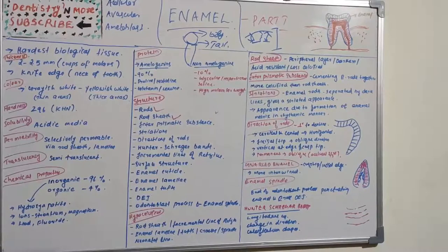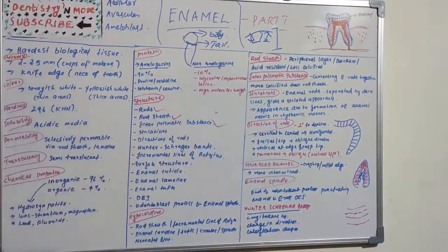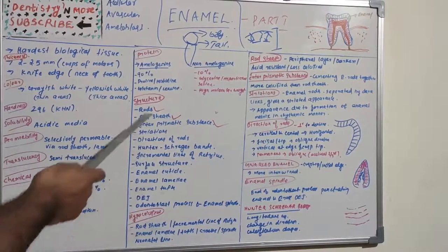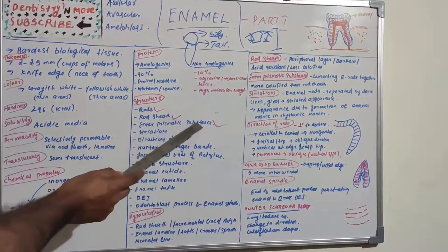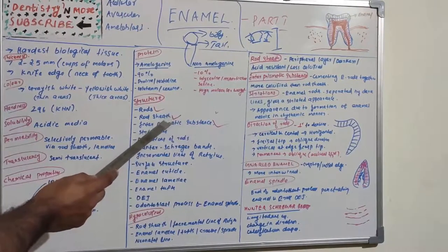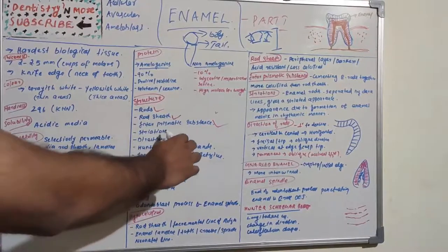The next structure is interprismatic substance, which is the substance present between the enamel prisms. It cements the enamel rods together. It is more calcified than the rod sheath but less calcified than the rods themselves. It appears to be minimal in human teeth.